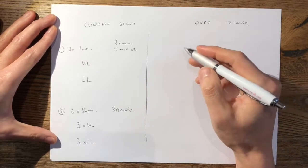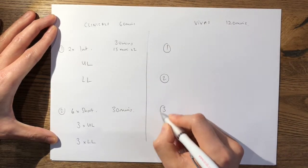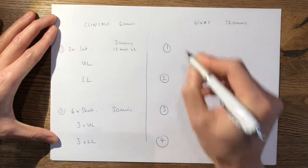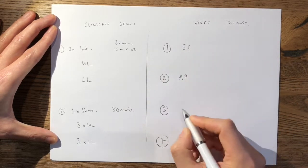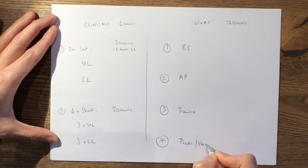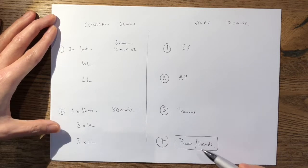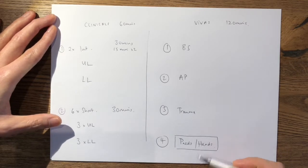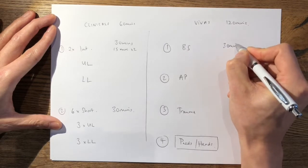In your vivas you have four tables and your four tables are 30 minutes each: basic sciences, adult pathology, trauma, and children's orthopedics and hands. It's quite important to know that your children's orthopedics and hands table will be examined by a pediatric orthopod and a hand surgeon. So these are 30 minutes each.